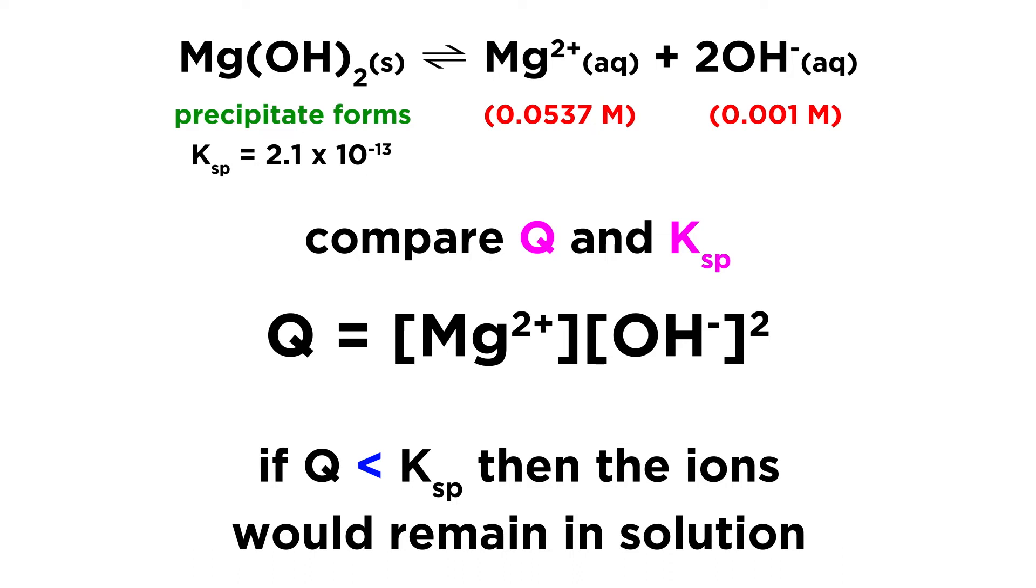If we consider a similar situation where the only difference is that Q is less than Ksp, precipitation will not occur, and all ions will remain in solution.